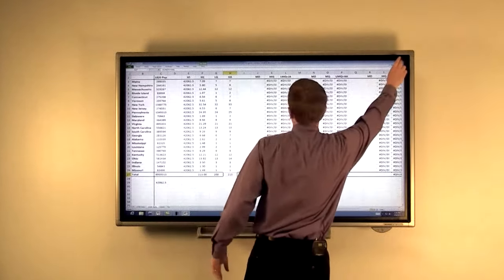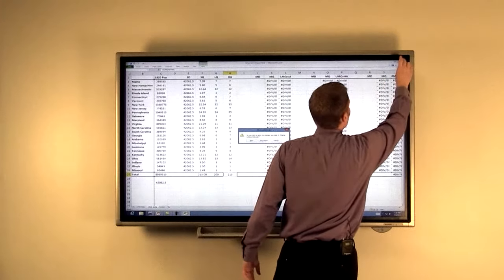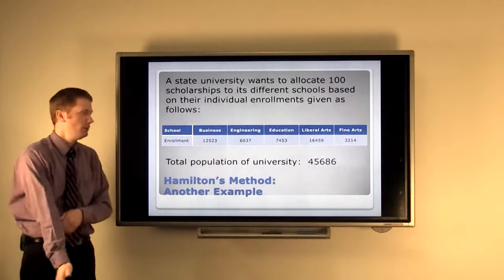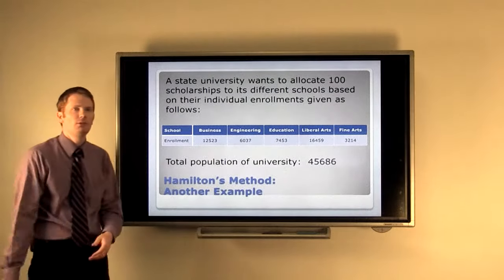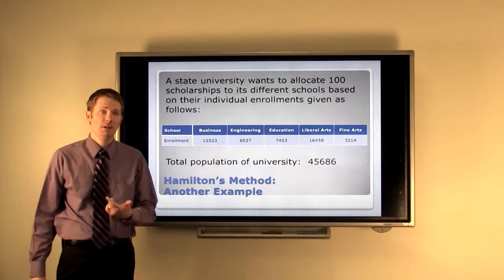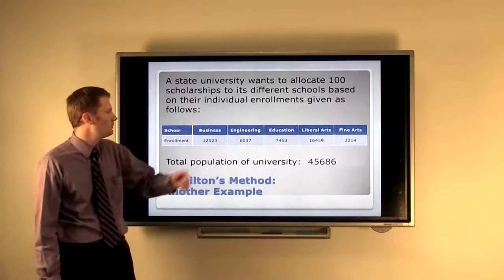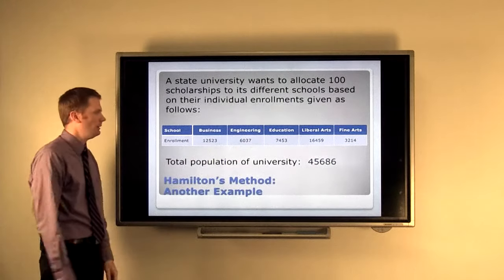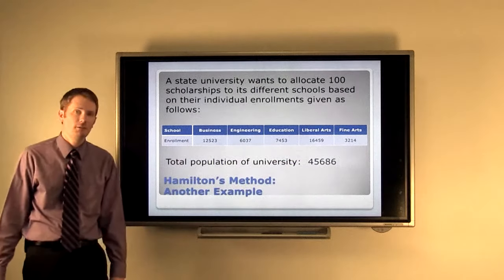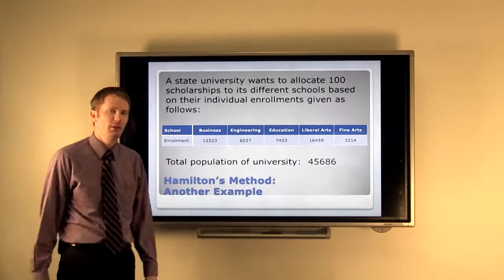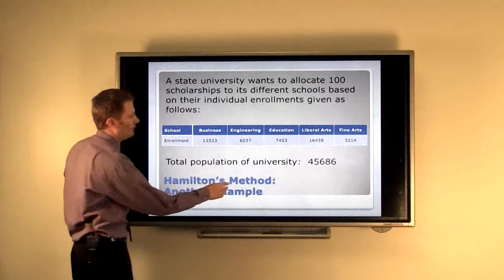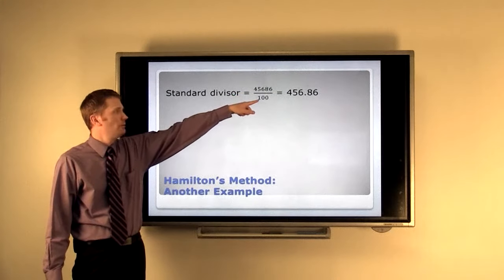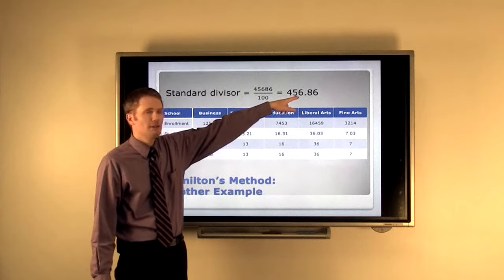So, we're going to save this because we're going to revisit this later. And go back and let's do one more example that's actually much smaller and not in historical context. Suppose a state university wants to allocate 100 scholarships to its different schools based on their individual enrollments given as follows. So, we've got five schools here. The business department, the engineering school, the education, liberal arts, and fine arts. And these are their associated populations. So, the entire enrollment of this school is 45,686. And the university wants to disperse these 100 full scholarships evenly among the different schools based on their enrollment.